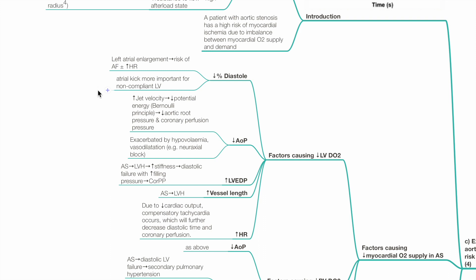Aortic stenosis leads to left atrial enlargement, risk of atrial fibrillation and tachycardia. Atrial kick is more important for the non-compliant left ventricle, which hypertrophies due to aortic stenosis.